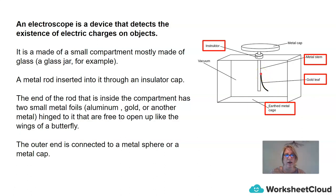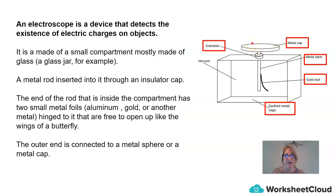At the end of the metal rod, we have folds of metal foil. In electroscopes found in school laboratories, these leaves are often made out of gold. In our lesson today, we can use aluminium foil or any other type of metal. The foil is hinged so it is free to open up, and it looks like the wings of a butterfly. The outer end of the metal rod or stem is connected to a metal cap, disc, or sphere.